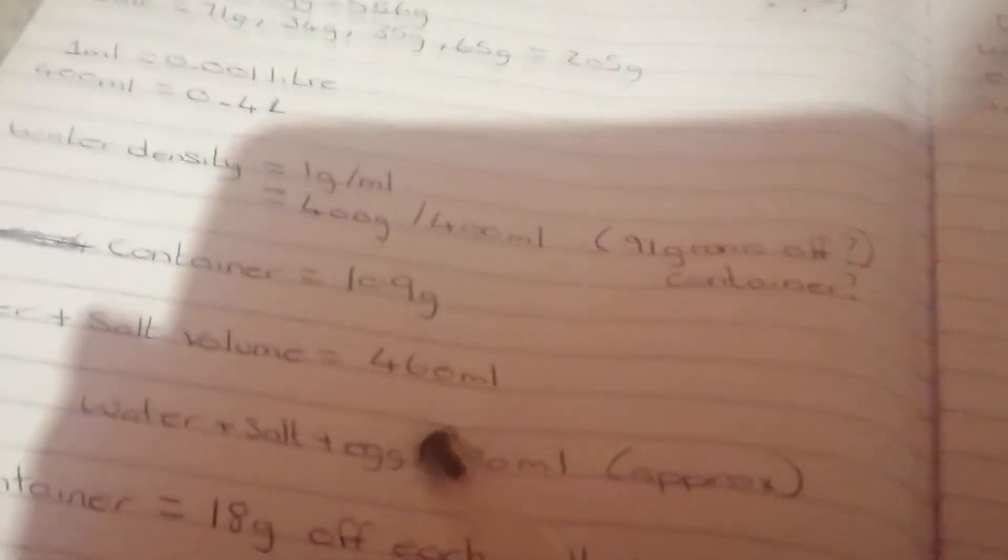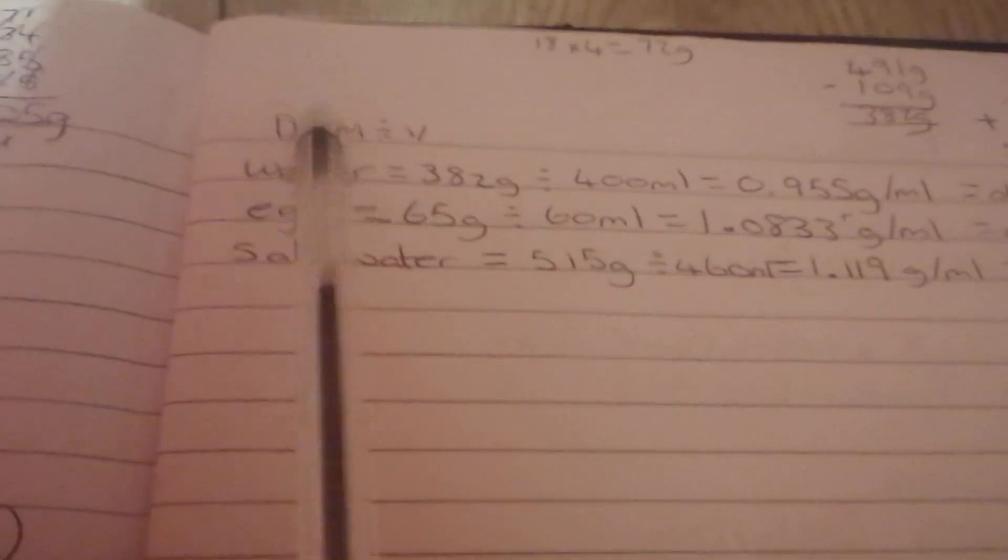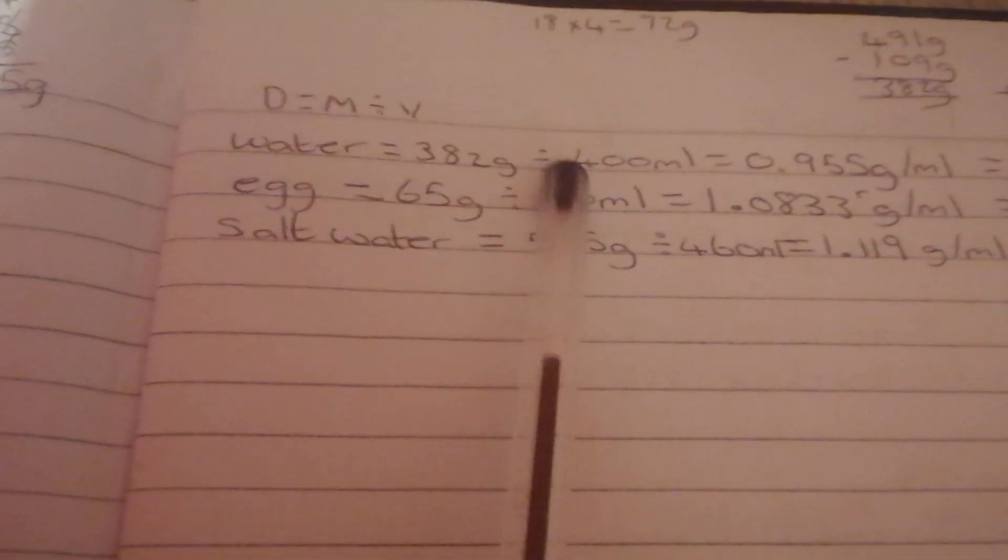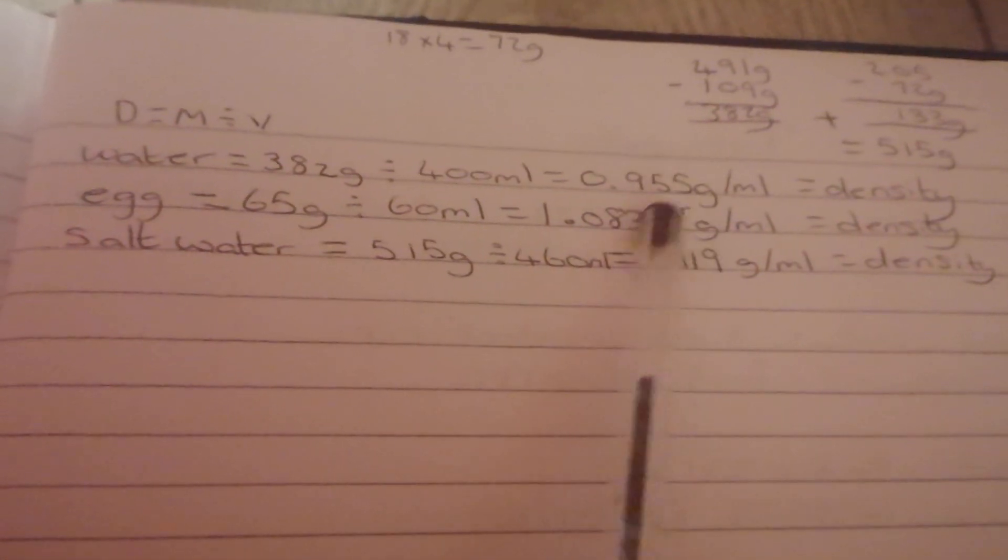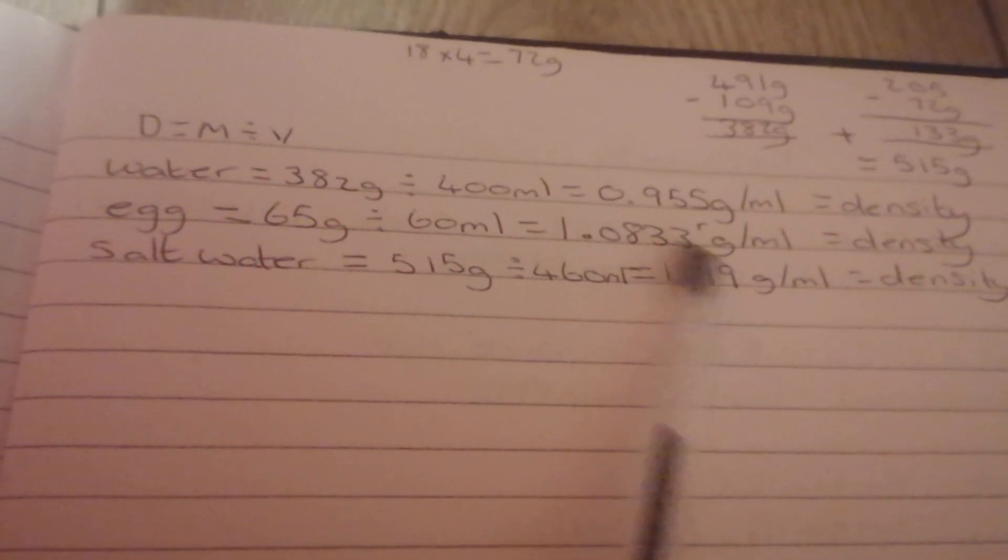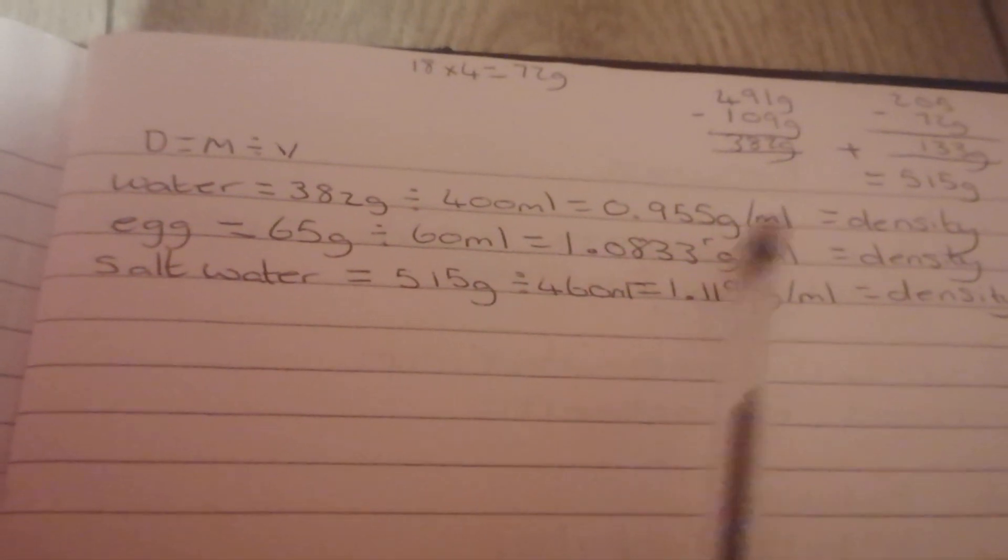So obviously I did Riley's experiment as I said. Worked out all the masses, took away the container mass, did the volumes, found out all the volumes and things, added it all up, did what I needed to do. Then I used density equals mass divided by volume, found the density. Obviously I found out that the egg was more dense than the water but less dense than salt water. So that's why it sank in water but rose in salt water because of the density of the medium change.